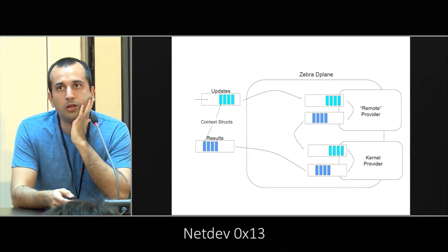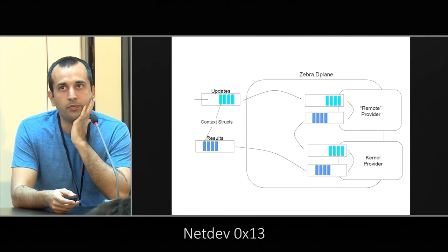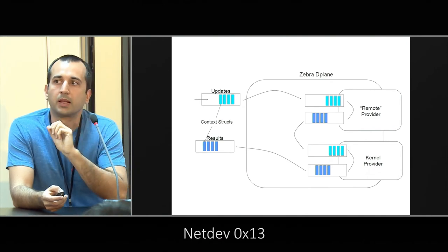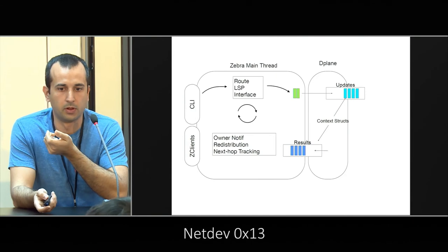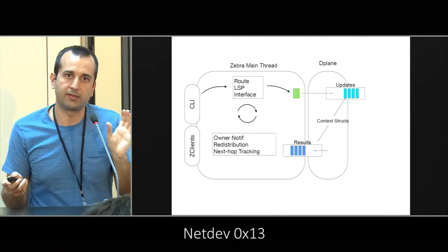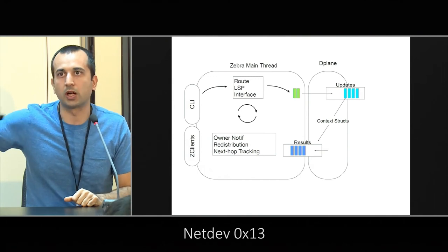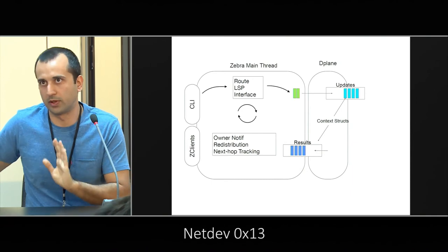Clarifying question: I only know the older architecture where you had Zebra talking to the kernel with netlink. I assume the kernel provider is the netlink speaker and the remote provider is for the ASIC or anything else. So basically in this diagram, the Zebra data plane thread is inside Zebra itself — the left side is the single-threaded Zebra main thread as it exists today, and the right part is a separate thread that's just in charge of the data plane. Answer: Yes, exactly — the whole thing is Zebra; it's two threads inside the same process.